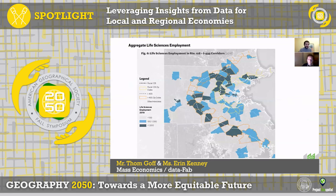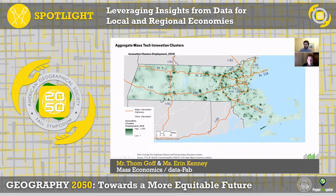To quickly run through a couple of examples: at the corridor level, you can see how life sciences employment is concentrated along the Route 128 and 495 corridors in Massachusetts. Next, this shows how you can also leverage the intersection of YTS and QCW data to create weighted point-level data — here's a heat map of innovation cluster employment across Massachusetts.